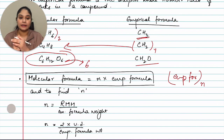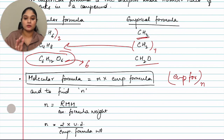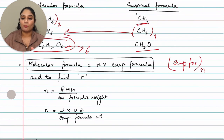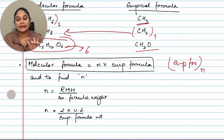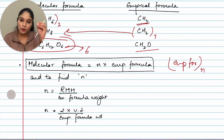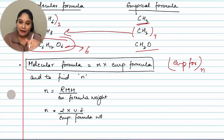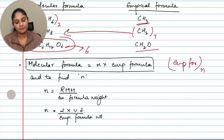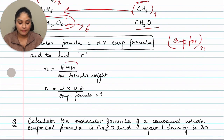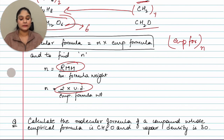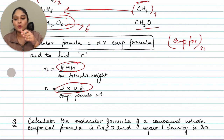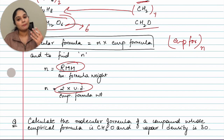To find n: n = relative molecular mass ÷ empirical formula weight. Another formula: RMM = 2 × vapor density, so n can also be found as: n = (2 × vapor density) ÷ empirical formula weight. So if vapor density is given in the question, you can still find n.